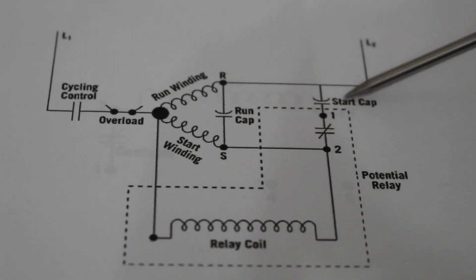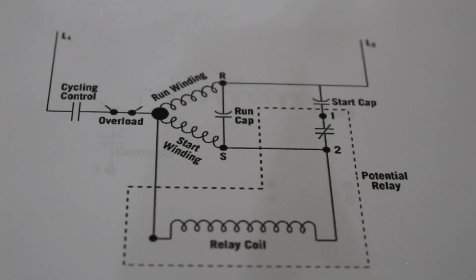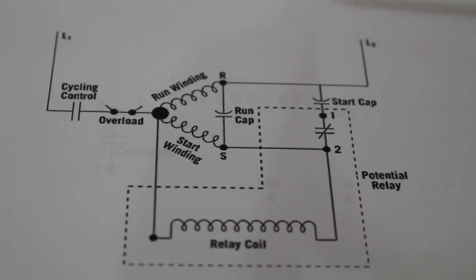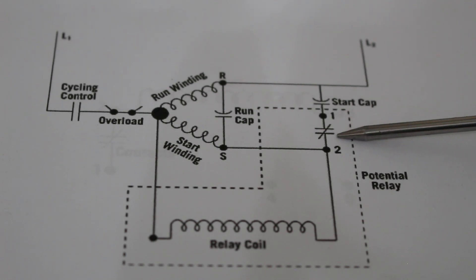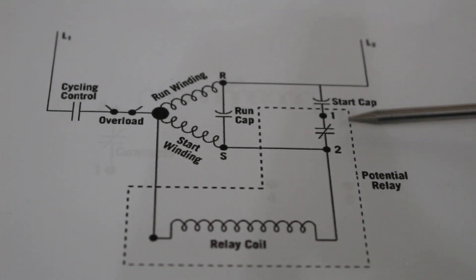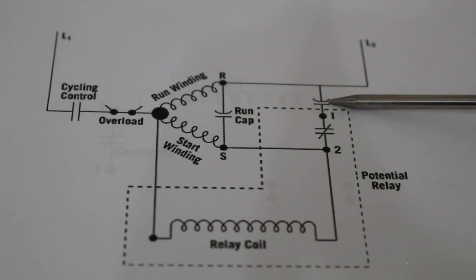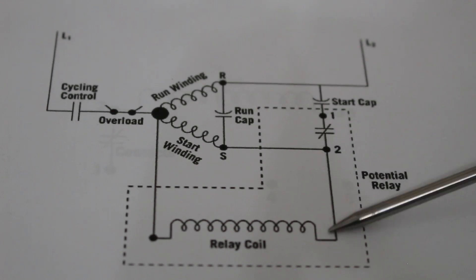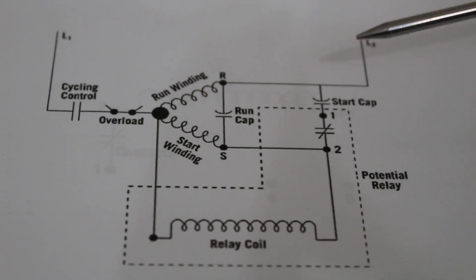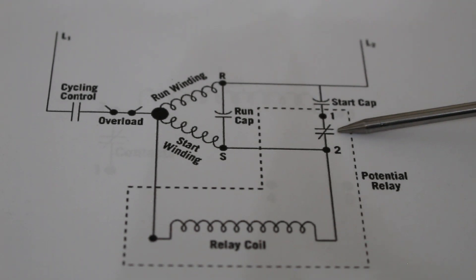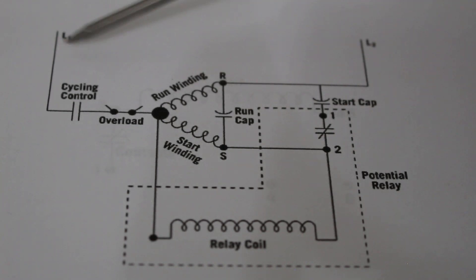Power is going to go through the run winding and start winding. Our compressor is going to start up, the amps are going to go up, and once the motor reaches a certain speed we're going to have something known as back EMF or counter EMF — EMF stands for electromotive force. Due to this, the contacts are actually going to open, which essentially takes the start capacitor out of the circuit since it already did its job starting the compressor. Then we're just running off the run winding — and we have a running compressor.